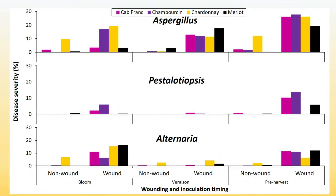And this is what we got. Those are three different fungi, and the x-axis shows different development stages — bloom, veraison, and pre-harvest. Each stage had two treatments: non-wounding and wounding. Overall, the wounding treatment at pre-harvest resulted in higher disease severity compared to other treatments. What's interesting is that at veraison, even for the wounding treatment, there was not much disease except for Aspergillus.